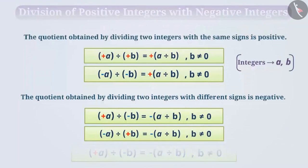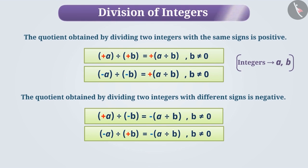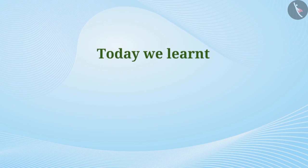In this way, you must have understood by now that the quotient obtained by dividing two integers with the same signs is positive, and the quotient obtained by dividing integers with different signs is negative. Note that in any case, the divisor cannot be zero. So today, we learned the division of integers. Examples related to these will be seen in the next video.